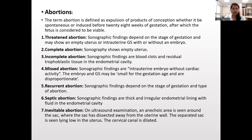Abortions: Expulsion of products before 28 weeks of gestation. Threatened abortion shows an empty uterus or intrauterine gestational sac with or without embryo. Complete abortion shows empty uterus. Incomplete abortion shows blood clots or residual trophoblastic tissue in the endometrial cavity. Missed abortion shows an intrauterine embryo without cardiac activity; the embryo can be small for gestational age and disproportionate. Septic abortion shows thick and irregular endometrial lining with fluid in the endometrial cavity. Inevitable abortion shows an anechoic area surrounding the gestational sac where the sac has dissected away from the uterine wall; the sac is seen lying low in the uterus and the cervical canal is dilated.